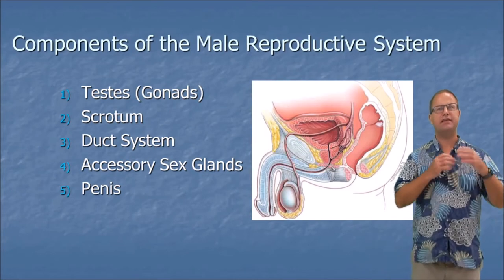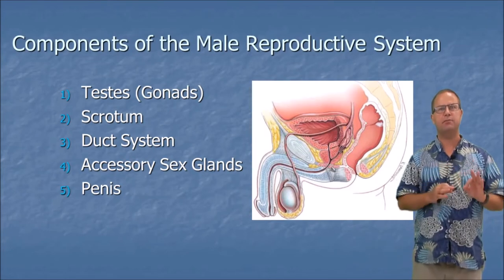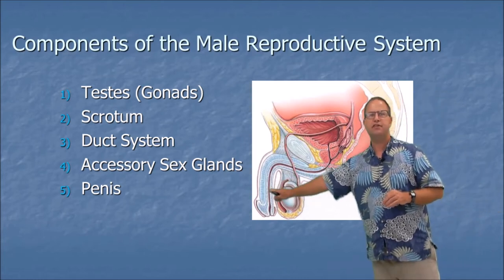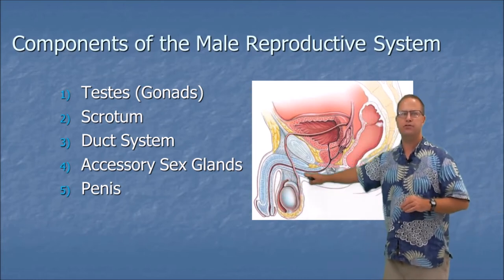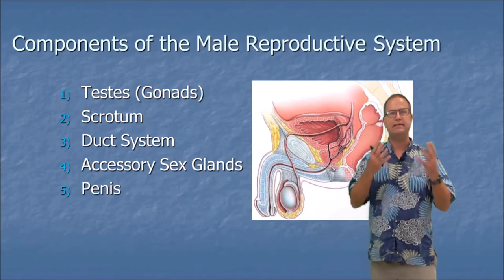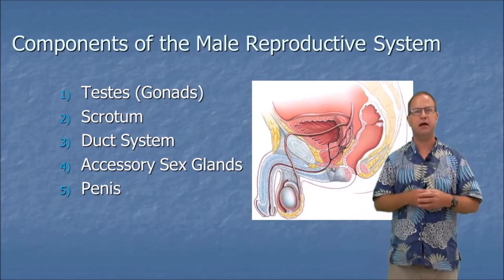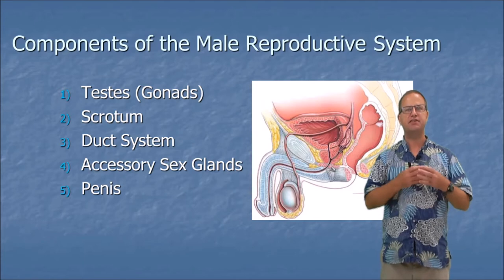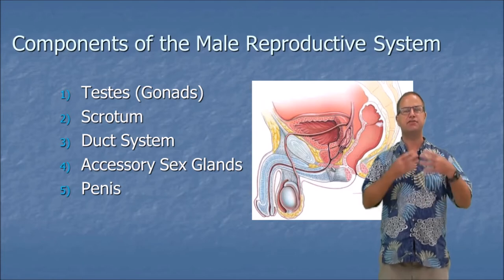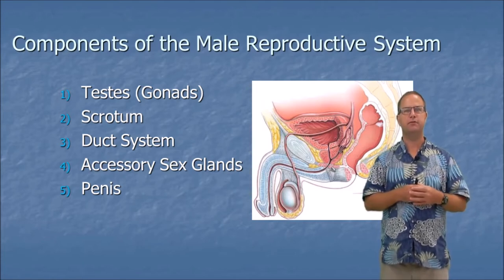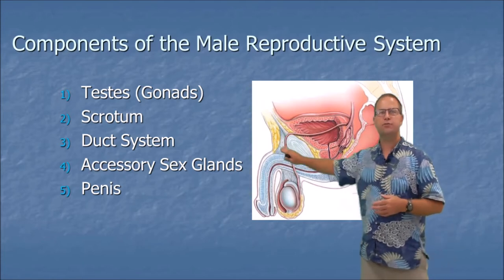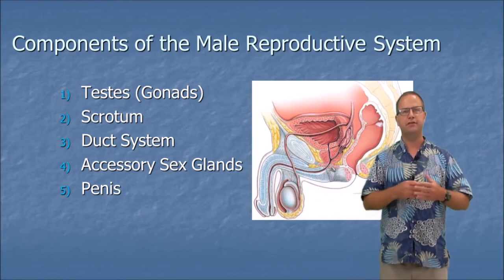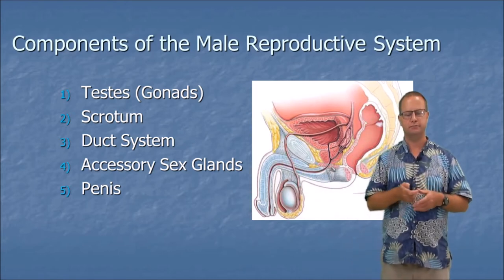Let's take a look at the components of the male reproductive system. We have the testes — the male gonads — sitting in the scrotum. We have a duct system that helps get spermatozoa into the urethra, accessory sex glands that make secretions that become part of the seminal fluid, and the penis — the organ of intermission that is inserted into the female vagina.